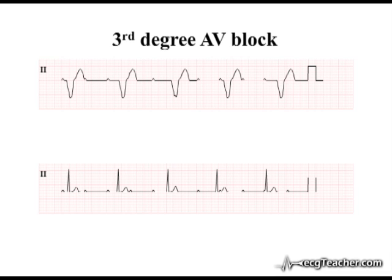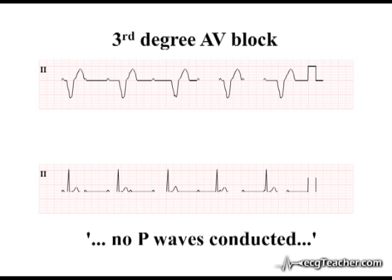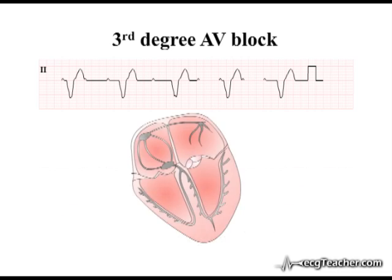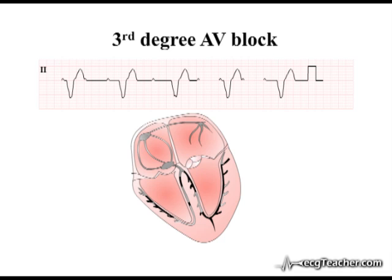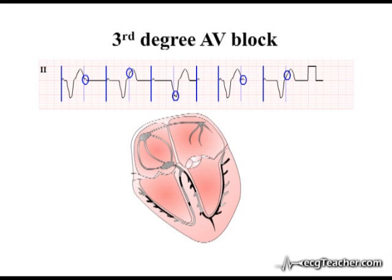In third degree or complete AV block, no P-waves are transmitted to the ventricular myocardium. When this arises secondary to diffuse damage of the conducting system, a ventricular focus will take over pacemaker function, driving ventricular depolarisation. The escape rhythm generated will be broad complex and will vary in rate between 20 and 40 beats per minute. AV dissociation is evidenced by regularly occurring P-waves which show no fixed relationship with the QRS complexes. The distance between P-waves and QRS complexes varies continuously, with some P-waves buried in components of the QRS complexes while others are fused with the T-waves.